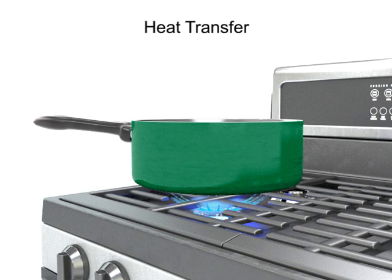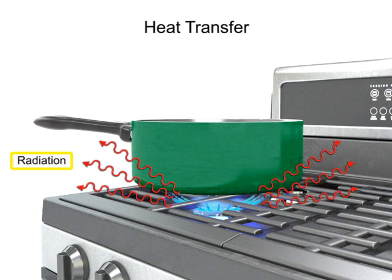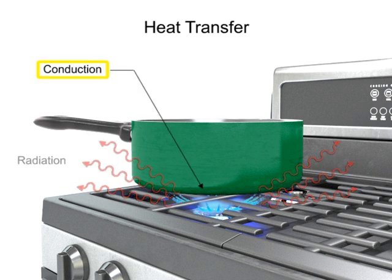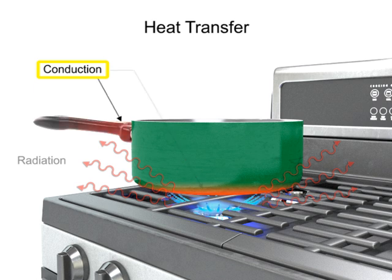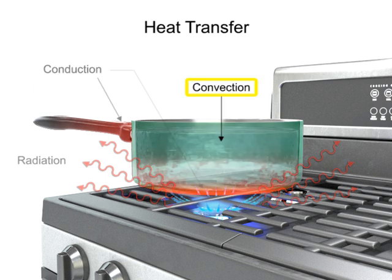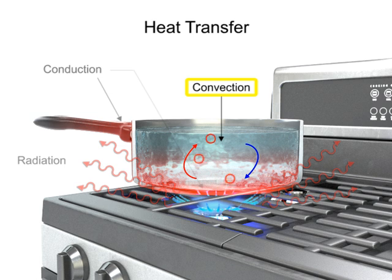Heat from the flame radiates in all directions. Conduction takes place with the transfer of heat from the burner to the metal pan. This heat transfer is also responsible for making the handle hot after a period of time. The water is heated by the process of convection, which is a circular movement caused by heated water rising and cooled water falling.